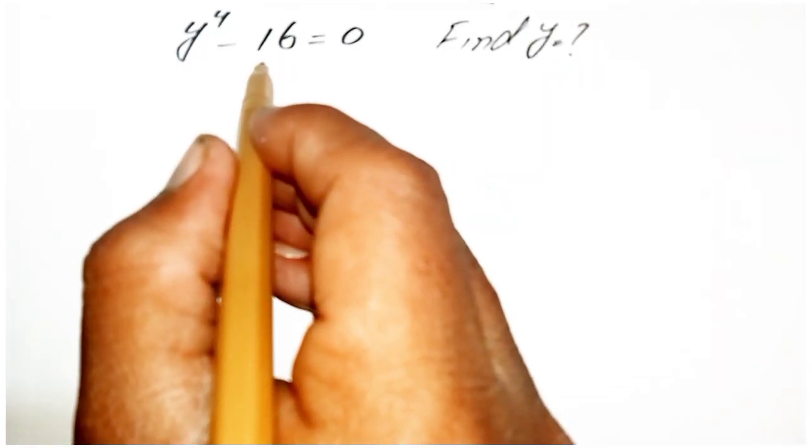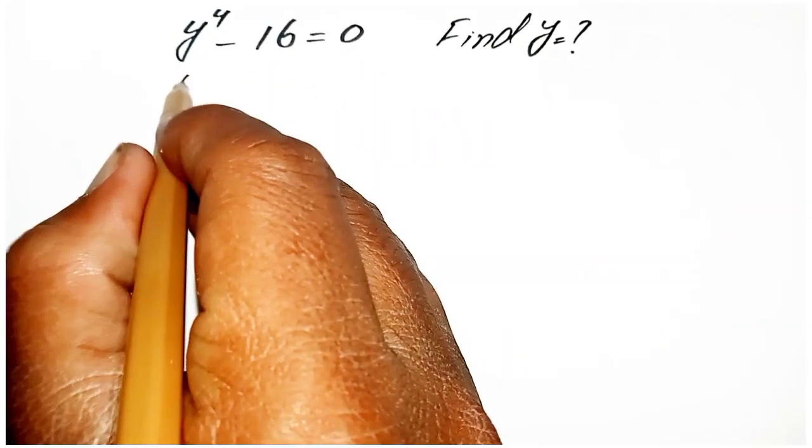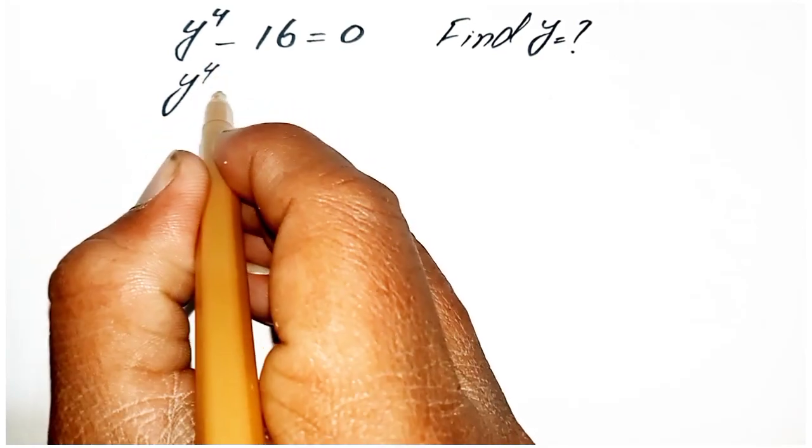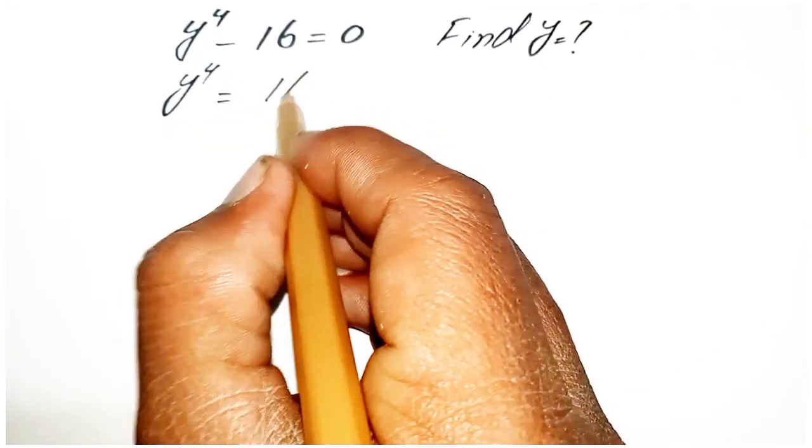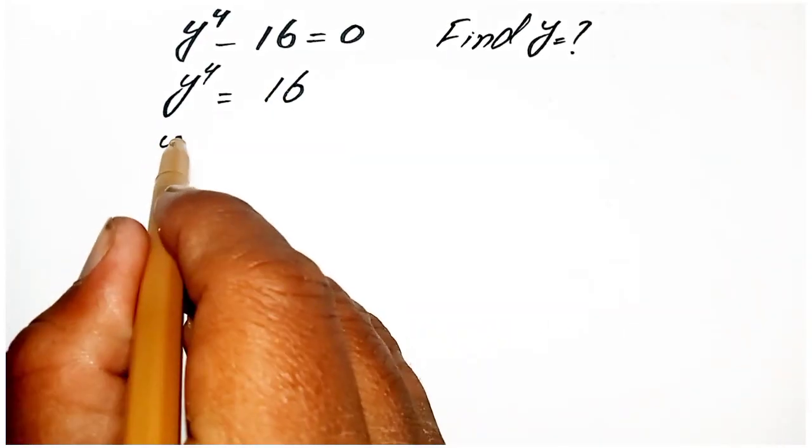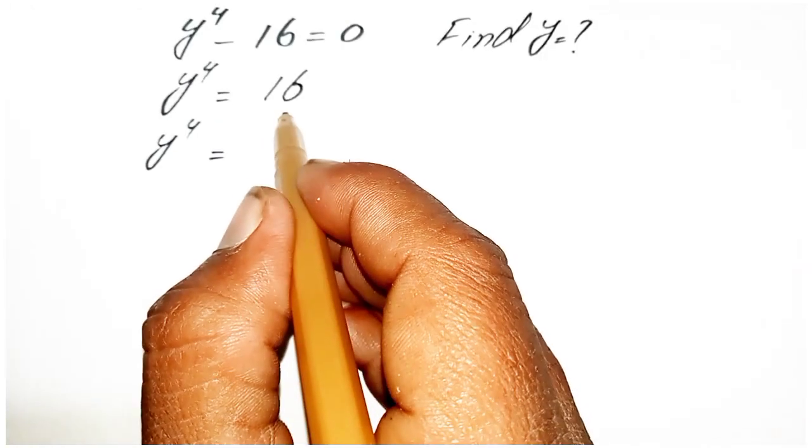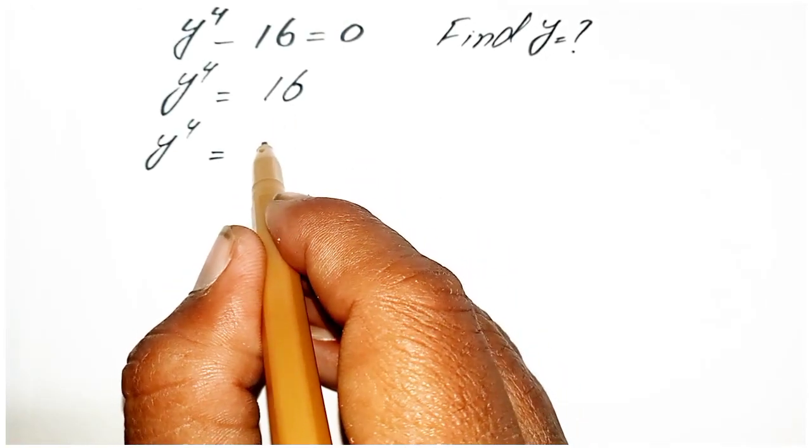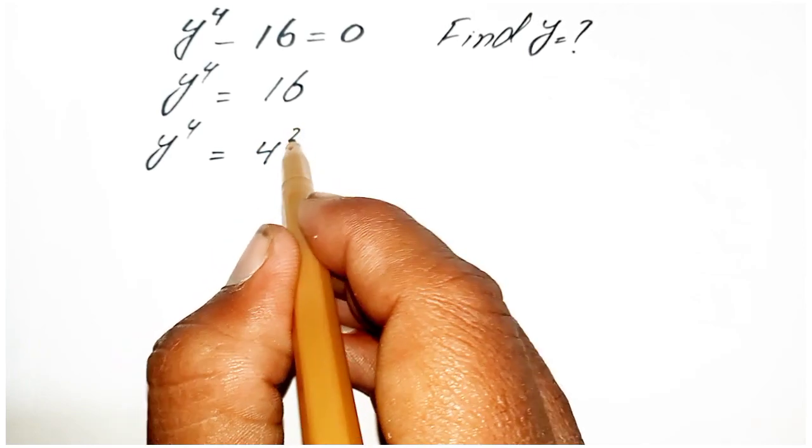We can take this 16 on the right side of the equation. This becomes y power 4 equals 16. We can write 16 as 4 power 2.